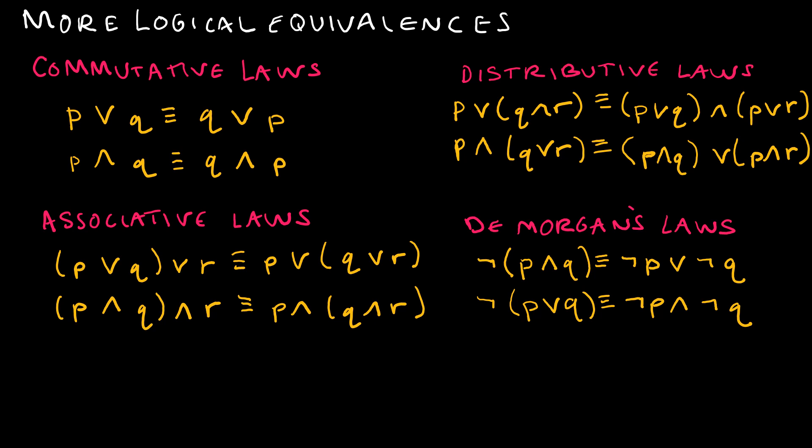A few more logical equivalences. I kept these on a separate page because these are words that you've seen before with the possible exception of DeMorgan's laws. But a commutative law, we know commutative is just talking about the order. So notice, the order doesn't matter if I'm dealing with two propositions.